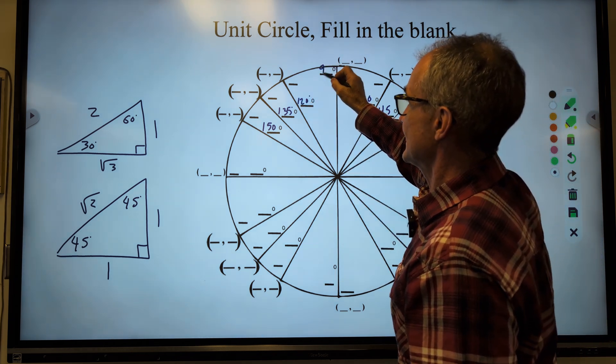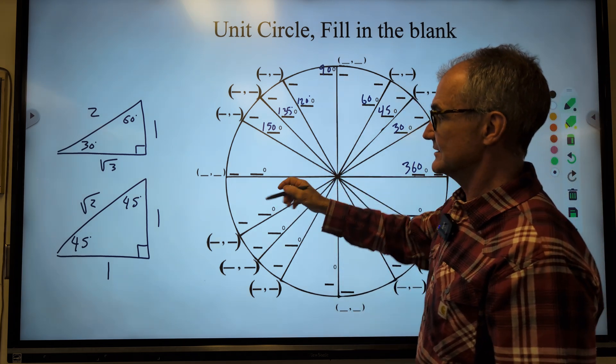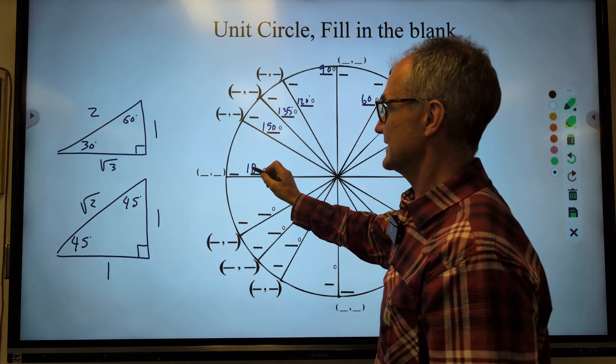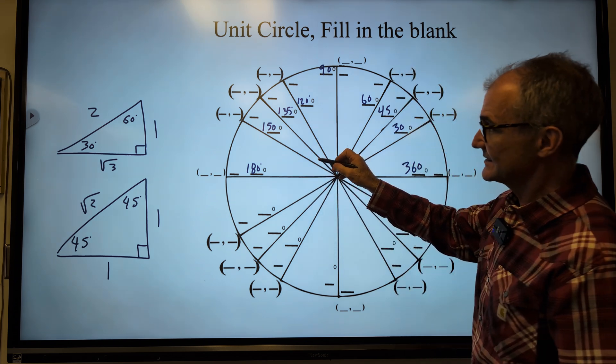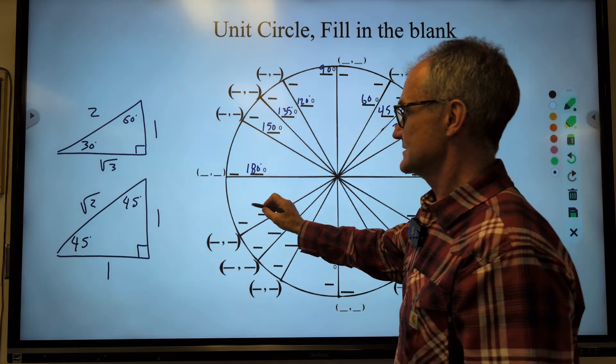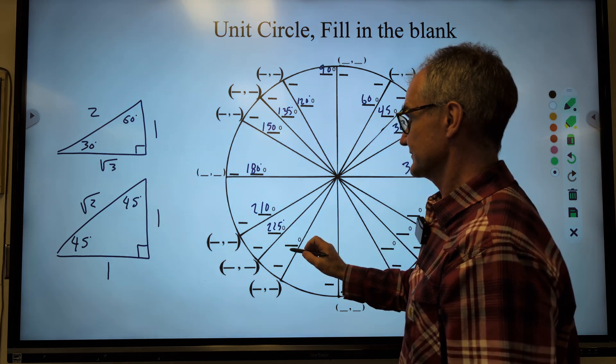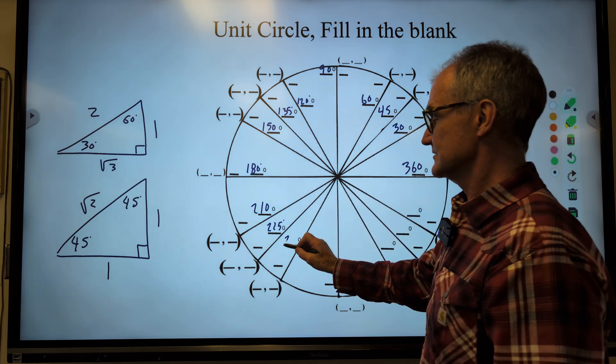Going down here, this is 30 degrees below the 180. So it's the exact same distance as this. 30 above, 30 below. So 210, 225, and then 60 below 240.